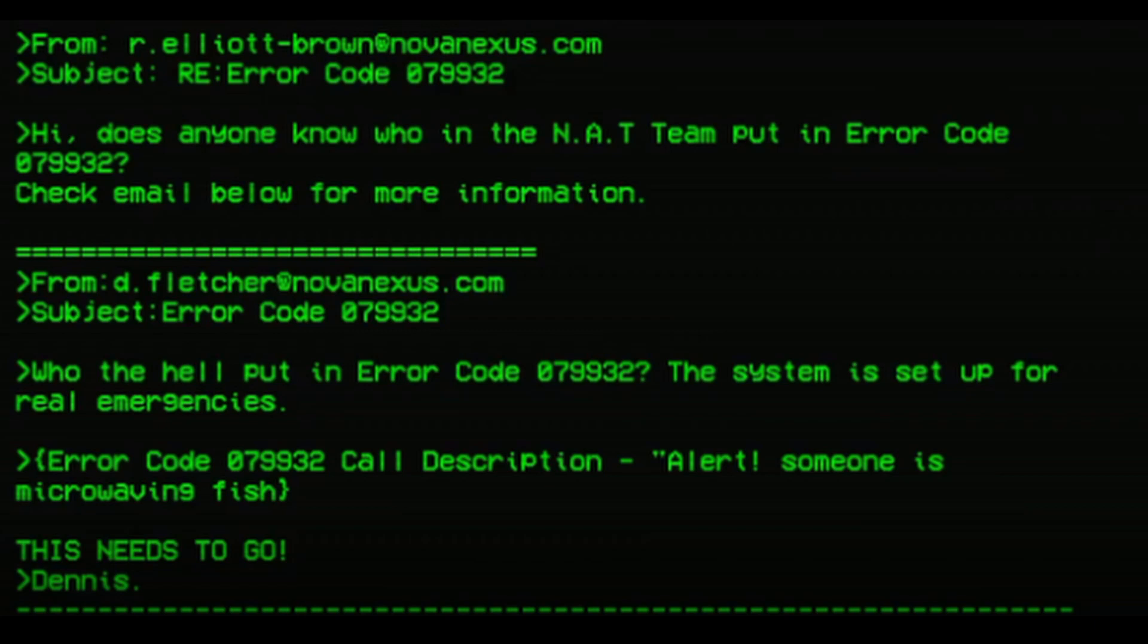Another secret we discovered has to do with the Kraken Division. Error 079932. Hi, does anyone know who in NAT team put the error code 079932? Check email below for more information. Who the hell put in this error code? The system is set up for real emergencies. Alert. Someone is microwaving fish. This needs to go.